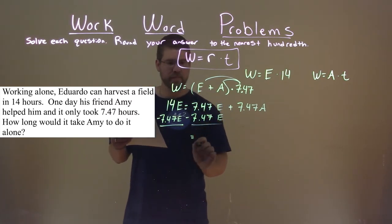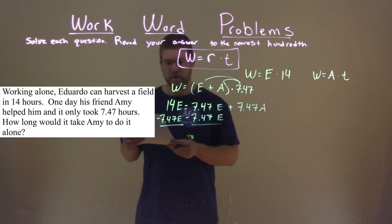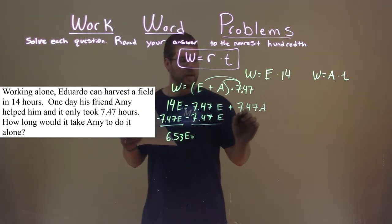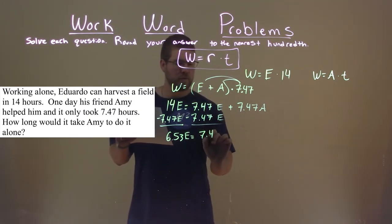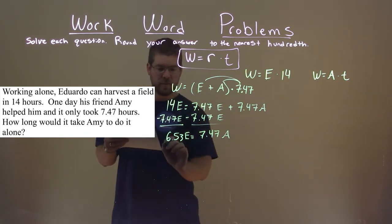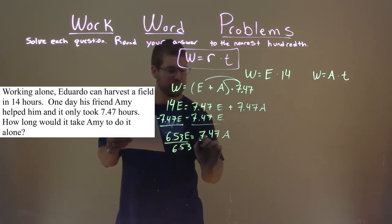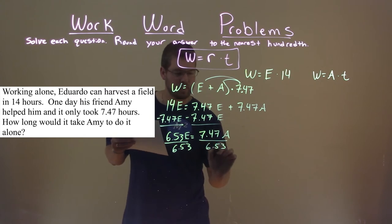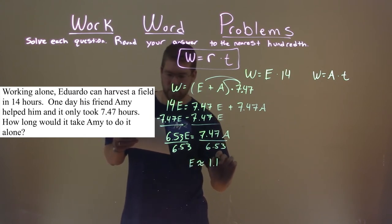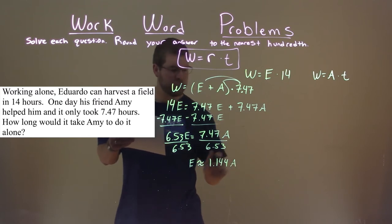And what am I left with here? Well, 14 minus 7.47 is 6.53, and don't forget the E. And on the right side, we have 7.47A. To get E by itself, I'm going to divide both sides by 6.53. And E is approximately equal to 1.144A.